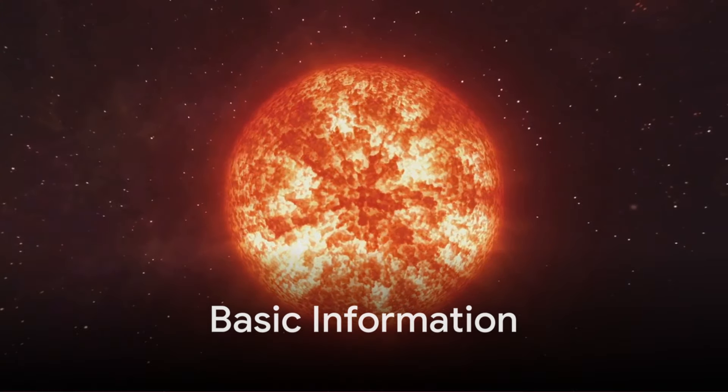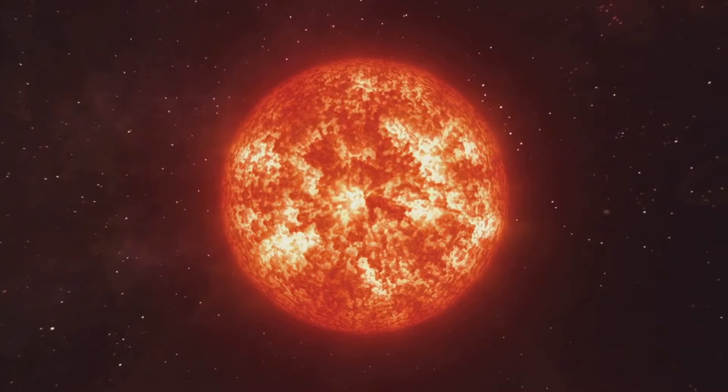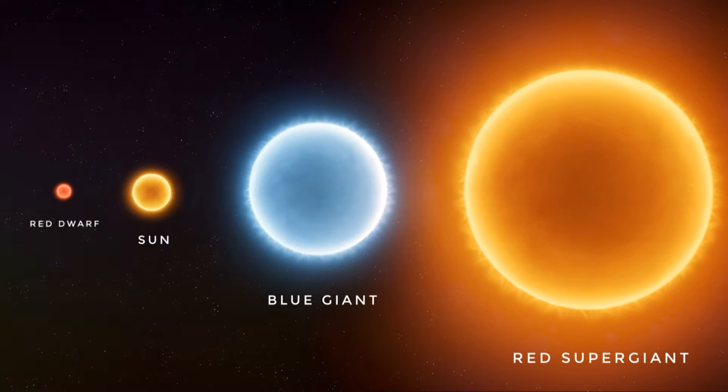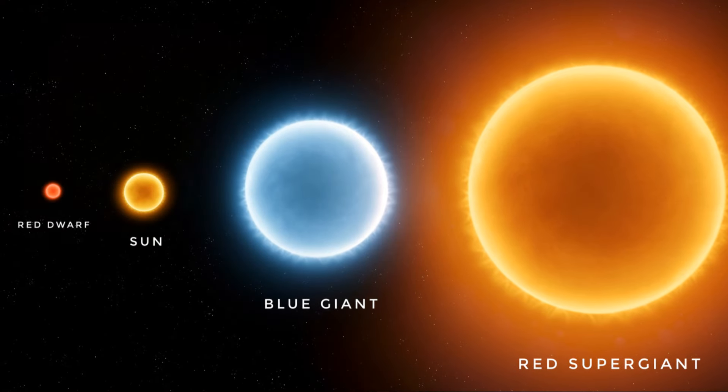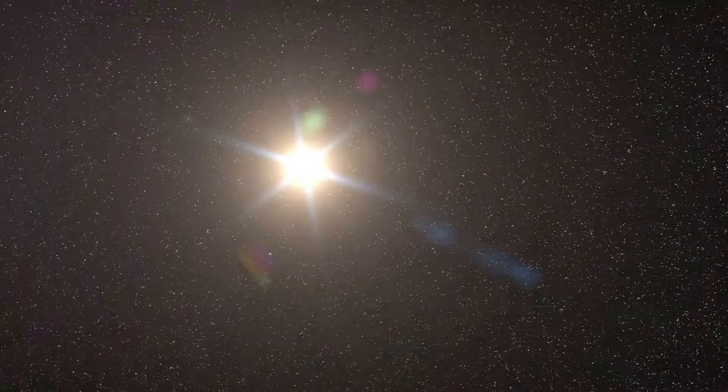Betelgeuse. It's a name that rolls off the tongue, isn't it? This stellar giant is classified as a red supergiant star, meaning it's in the final stages of its stellar life cycle. Located some 640 light-years away from Earth in the constellation Orion, this means that it takes the light from this star about 640 years to reach us, so when you look up at Betelgeuse you're actually seeing it as it was over 600 years ago.